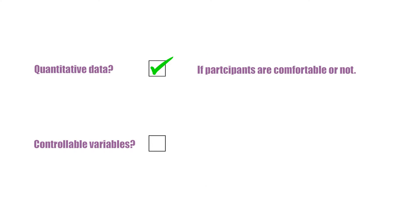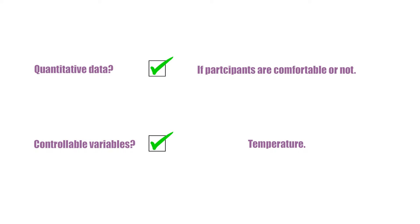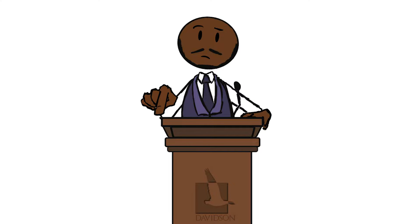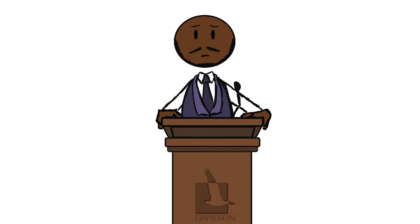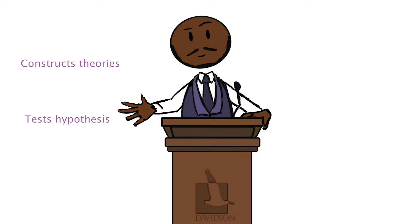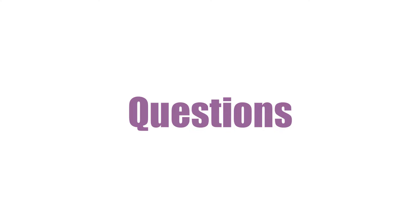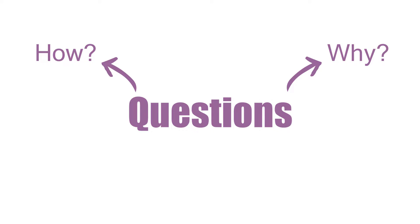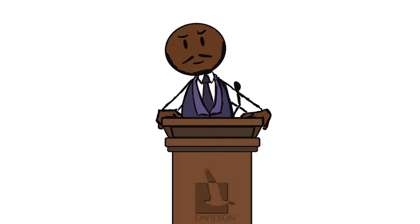If you do have variables that can be strictly controlled, then you will be able to establish cause and effect. Your study will also be replicable by other researchers in the future. Science constructs theories and tests hypotheses by asking questions with the intention of explaining how and why certain things happen. This is the scientific process.